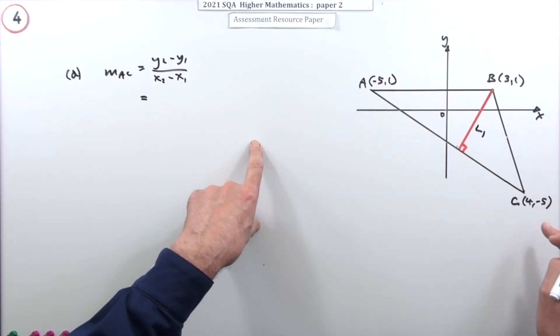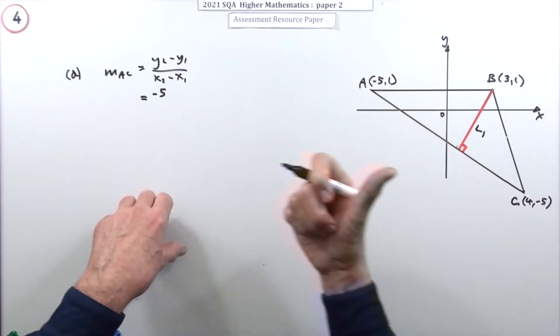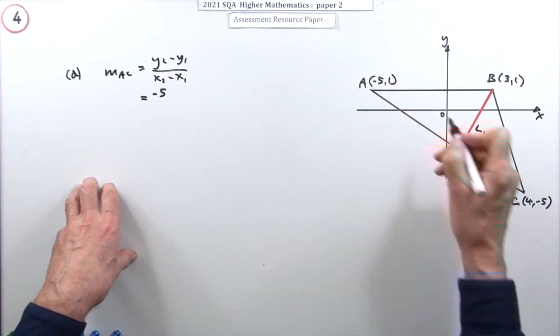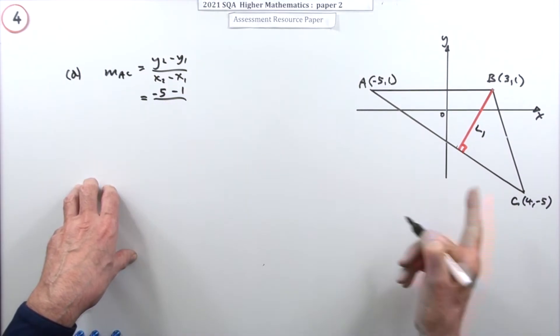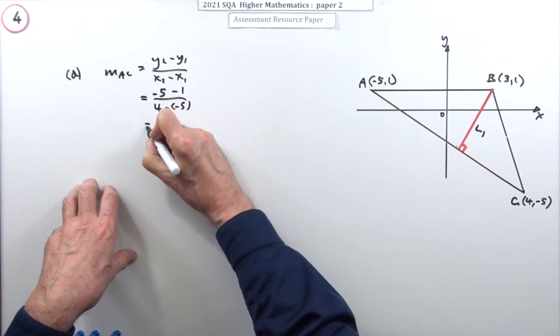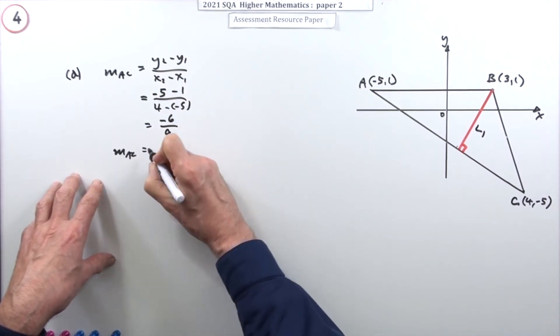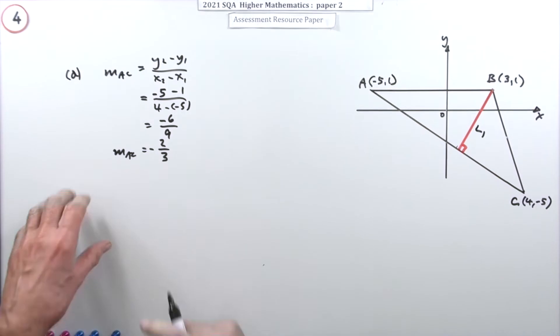So going from A to C, that's -5 take away 1 over 4 take away -5. So it's -6 upon 9, which means the gradient of AC is -2/3. That gets a mark.